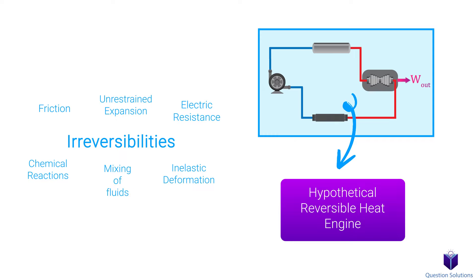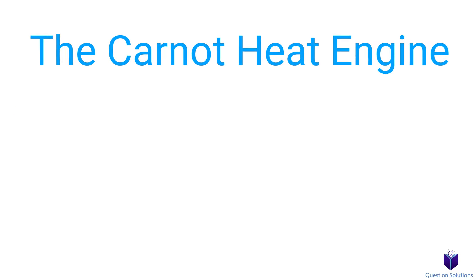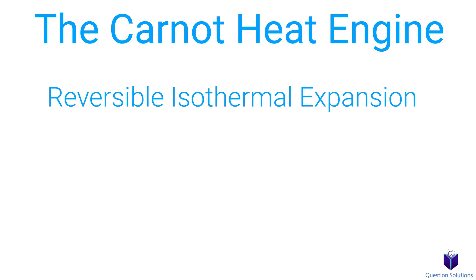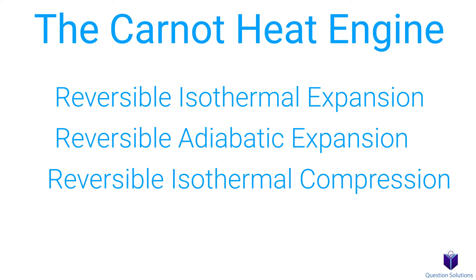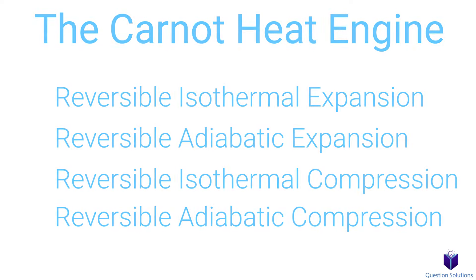One such reversible cycle is called the Carnot cycle, proposed by a French engineer named Sadi Carnot. A heat engine that operates on the Carnot cycle is called a Carnot heat engine. It has four reversible processes and it can work in closed or steady flow systems.